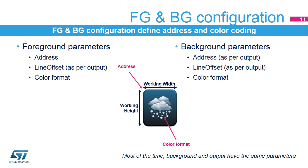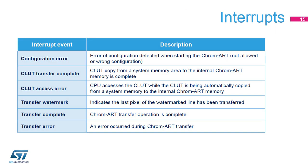This defines which area of the foreground and background layers are targeted by the Chrom-ART operations. The Chrom-ART Accelerator has six interrupt sources to signal configuration errors, CLUT transfer complete, CLUT access error, watermark reach during a transfer, transfer complete, and transfer error.